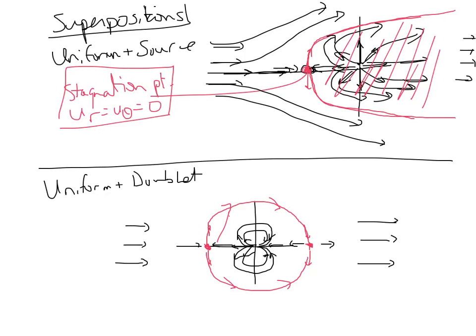Inside that circle, flow looks like a doublet. That's our internal flow and usually is not of particular physical interest.